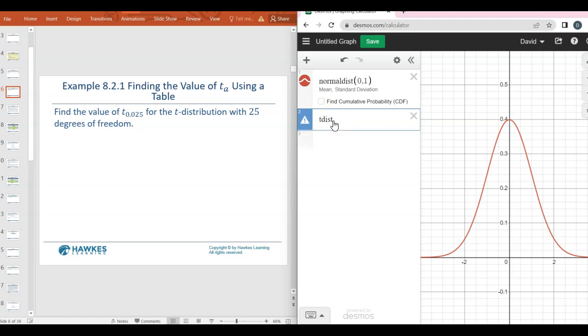If I type t-d-i-s-t, open the parentheses, it asks for the degrees of freedom. There's 25 degrees of freedom, so I typed that in there. You can see that this is almost identical. You have to zoom in really tight to see that there is a difference here.